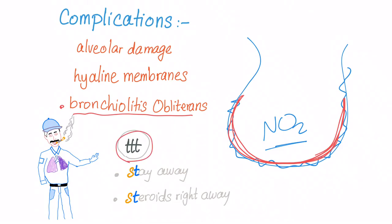Regarding treatment, remember the two scenarios. If the farmer entered the silo and suddenly has an allergic reaction, coughing severely, give steroids right away. Second scenario: if it's chronic exposure to the silo with smoking adding on, stay away from both smoking and the silo dust exposure. So: stay away, or steroids right away. That was silo filler's lung.